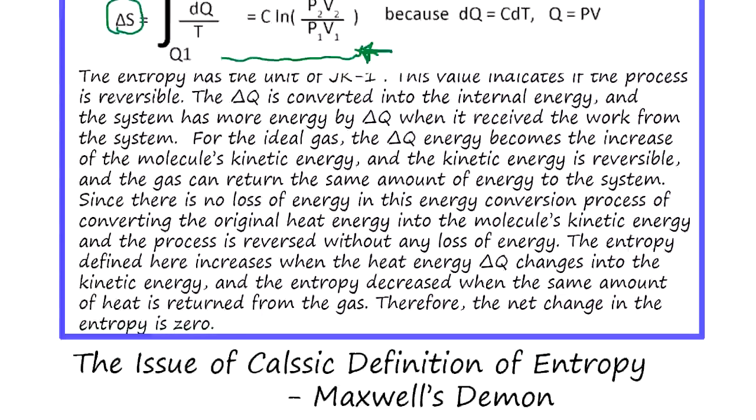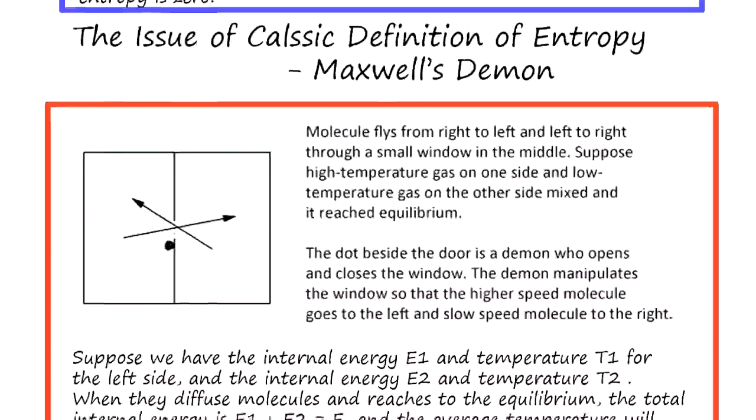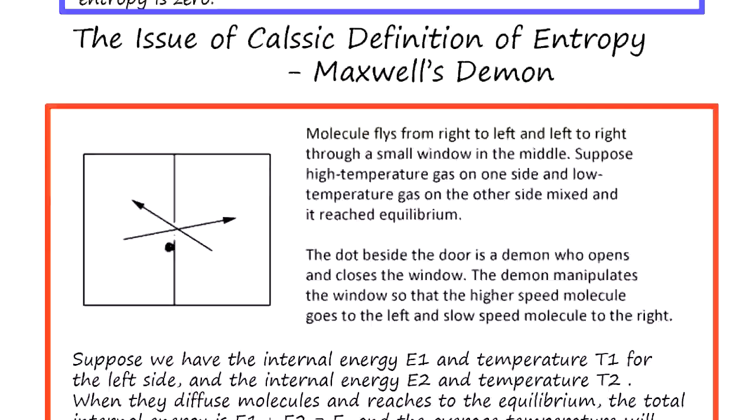The issue of classical definition of entropy is Maxwell's demon. Suppose you have same pressure, same amount of gas, but two different types: type one and type two. This partition is closed initially.